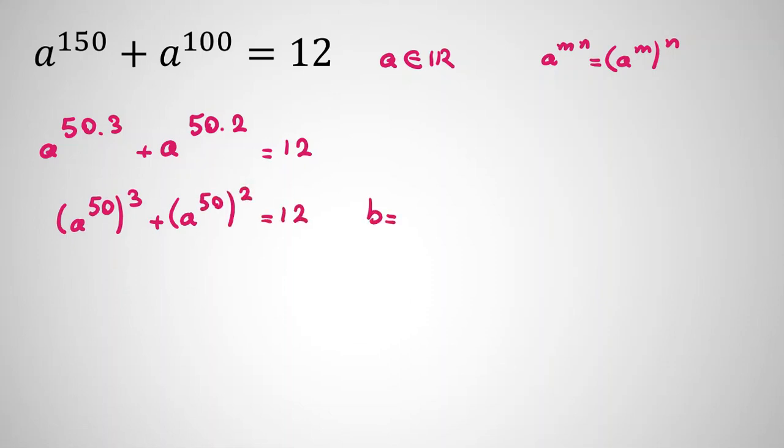Now, we define b equal to a to the power of 50. So it will be b cubed plus b squared equal to 12. Now here, we try to find one answer.